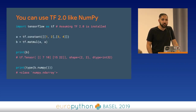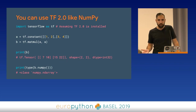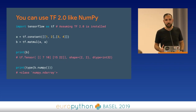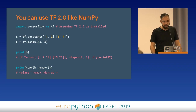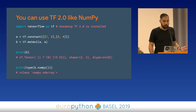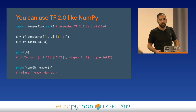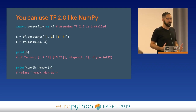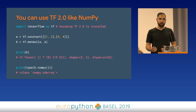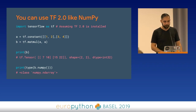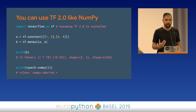Earlier I mentioned you can use TensorFlow 2.0 just like NumPy. For those who've used NumPy, this code may look familiar — we're creating a two-by-two matrix, doing a multiplication on it, and printing it out immediately. We couldn't do this with TensorFlow 1.x: you had to initialize variables, run the graph, and there was more involved than just creating the matrix, doing the math, and printing it. This is a really nice feature that makes it much easier to use.